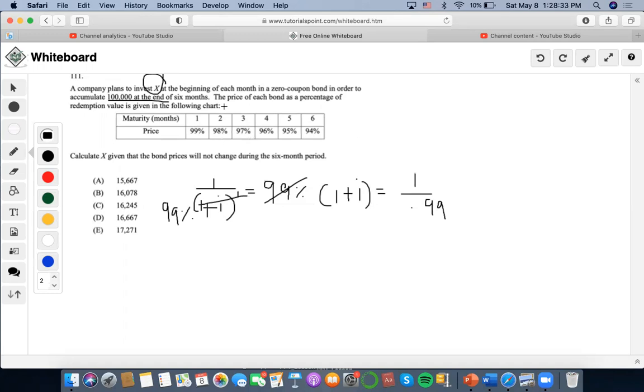So if I were to invest X at the beginning, it would be X times this amount, plus X times this amount, plus X times this amount. So I'm just going to substitute X out.